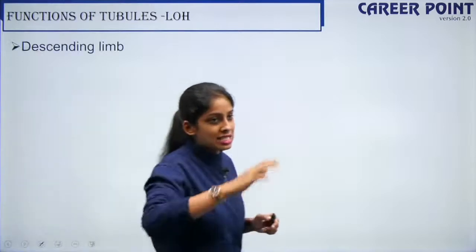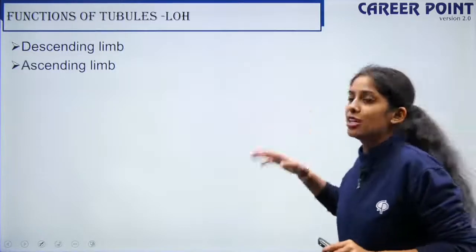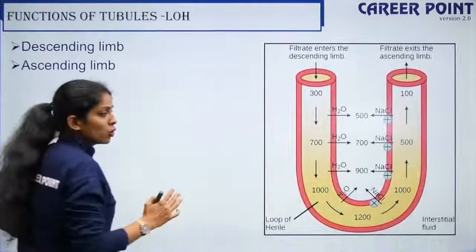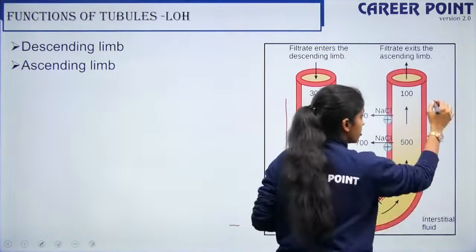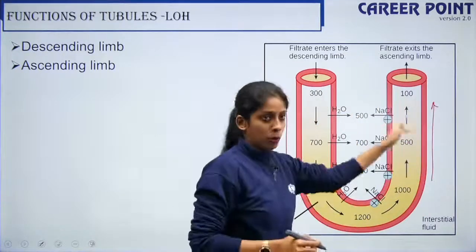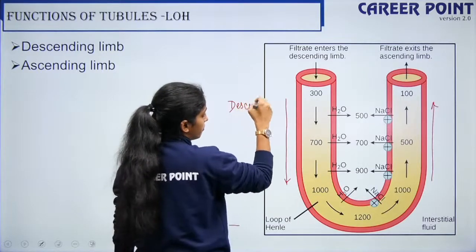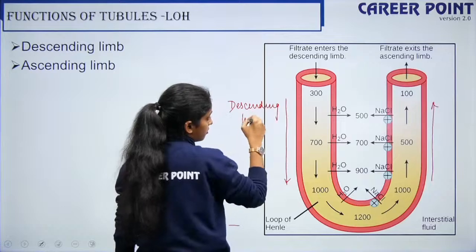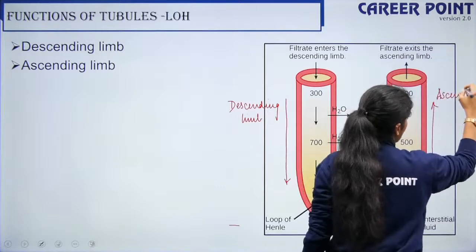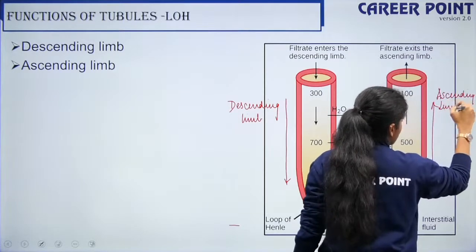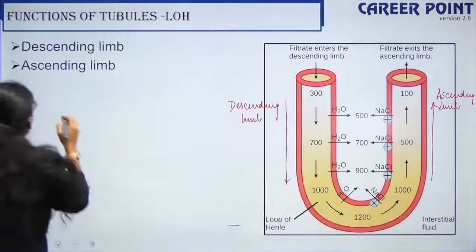The next one is the loop of Henley. This is a hairpin-like structure. The filtrate comes down through the descending limb and moves up through the ascending limb. Let's talk about the descending limb first and then the ascending limb.